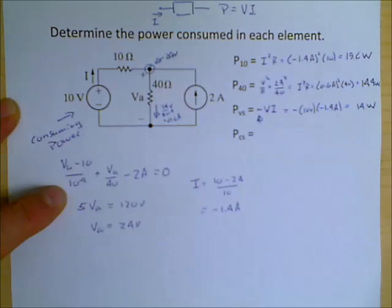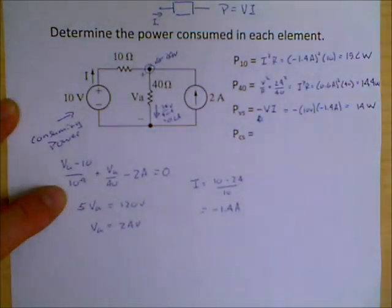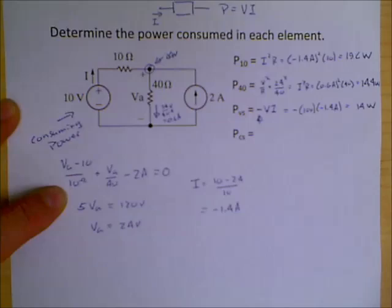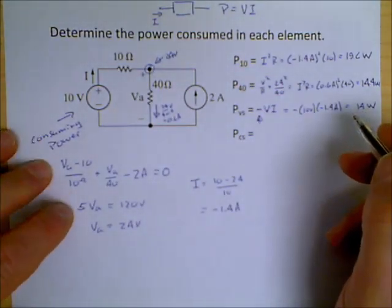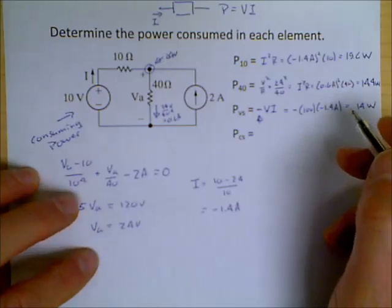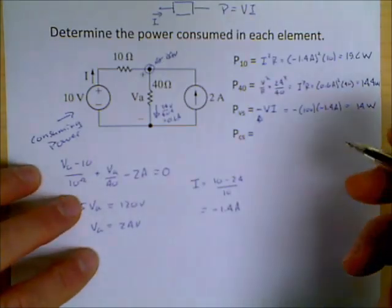And that's okay. You can have a battery that's being charged. It's still a voltage source, but it's being charged by the rest of the circuitry that's around it. And so it's alright for a voltage source or a current source to be supplying power.